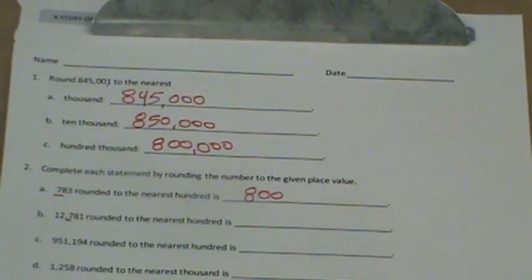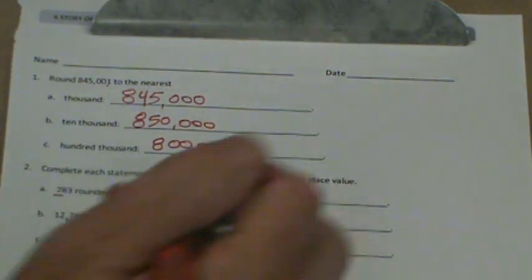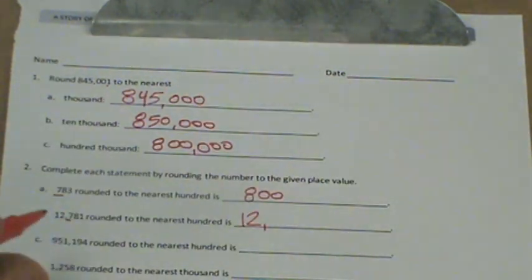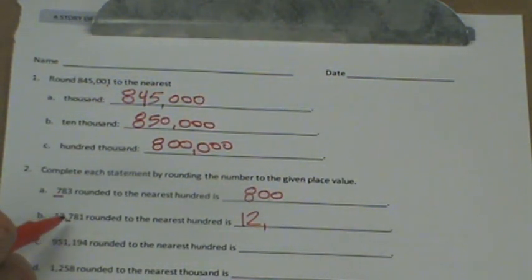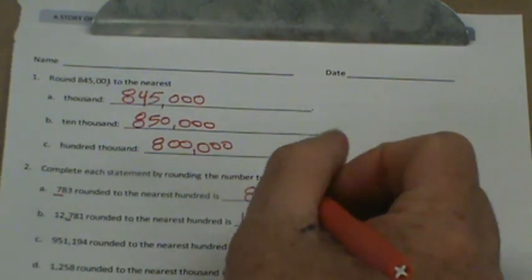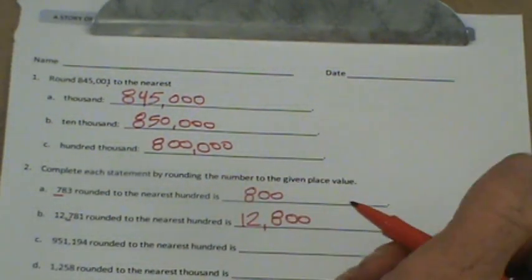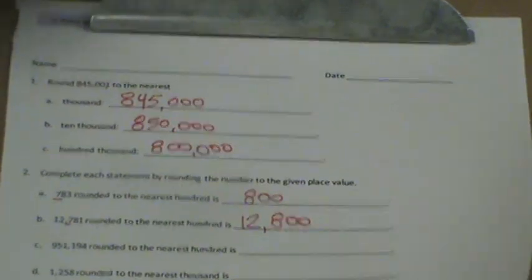Let's do B rounded to the nearest 100. There's my 100 spot. 12,000. We know that 12 is going to stay the same, the 12,000. But will this 7 become an 8 or remain a 7? Well, 781 is close to 800. Much closer than just 700. And that 81 is beyond the midpoint. So we're going to round up to 12,800.